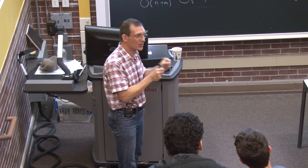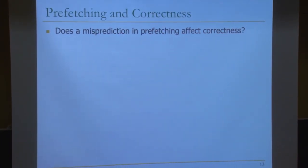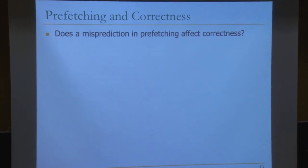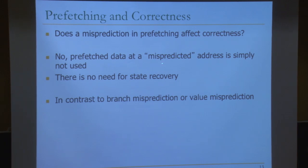This involves predicting which address will be needed in the future, and usually works if programs have predictable miss address patterns. Does a misprediction in prefetching affect correctness? No — it's speculative; if you mispredicted the address, the data is simply not used. There is no need for state recovery. This is very different from branch misprediction, where you have to recover.